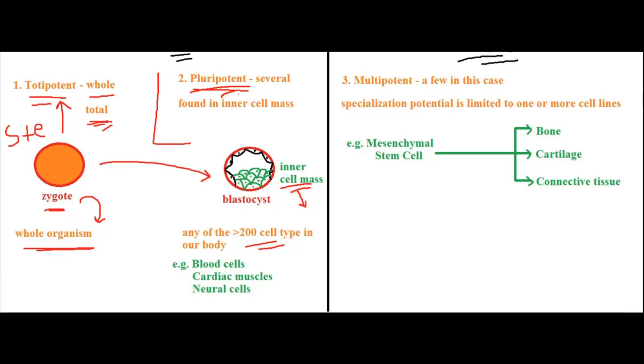This is called a pluripotent stem cell because it is forming several cells—all the cells, but not what the trophoblasts can form. So it is not totipotent because it's not forming the whole thing. The inner cell mass is called pluripotent stem cell. The meaning of pluri is several.